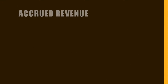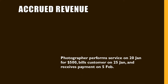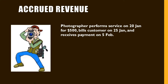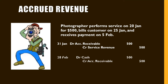The next scenario illustrating adjusting entries is that of accrued revenue. This is simply when cash is received by the entity after the revenue has been earned. Suppose that a business photographs a wedding on the 20th of January for a $500 fee, bills its customer on the 25th of the month, and receives payment on the 5th of February. The firm would record its $500 revenue at the end of the month by debiting accounts receivable and crediting service revenue. It would adjust this entry at the end of the next period after payment has been received by debiting cash and crediting accounts receivable.